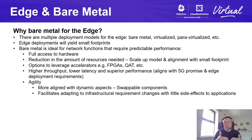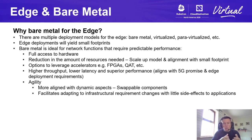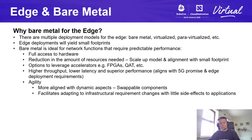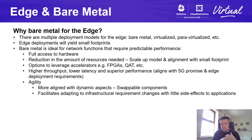Bare metal is ideal for network functions that require deterministic and predictable performance. Why is bare metal a good choice as we transition from the VNF world to the CNF world? We have full access to the hardware, which means a reduction in required resources. We can look at a scale-up model — scaling up the capabilities of a bare metal platform versus a scale-out model — aligning nicely with a smaller footprint. We also have options to leverage accelerators like FPGAs, QAT, or GPUs, and bare metal delivers higher throughput, lower latency, and superior performance, aligning with the 5G promise.